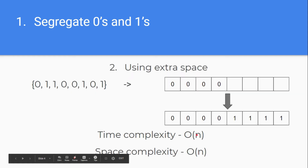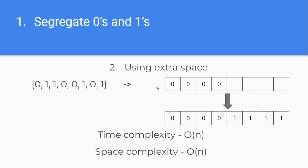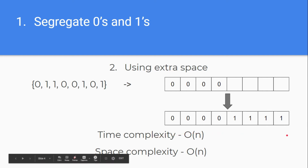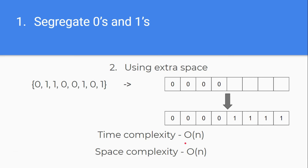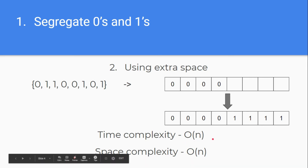The next approach could be making a new array of the same length as the given array, pushing all the zeros at the beginning and filling the remaining places with ones. In this approach, we iterate through the array nearly once, so time complexity is O(n). We are using extra space for the new array, so space complexity is also O(n). Both time and space complexities are O(n).